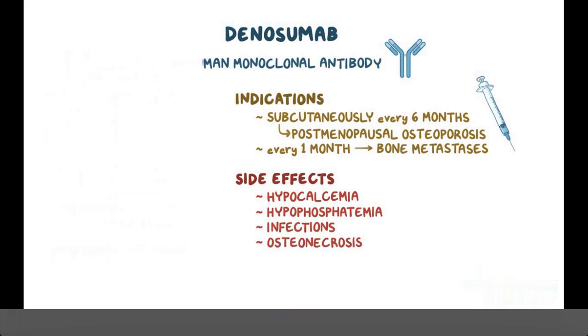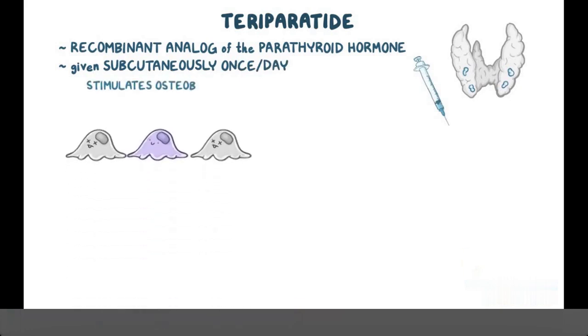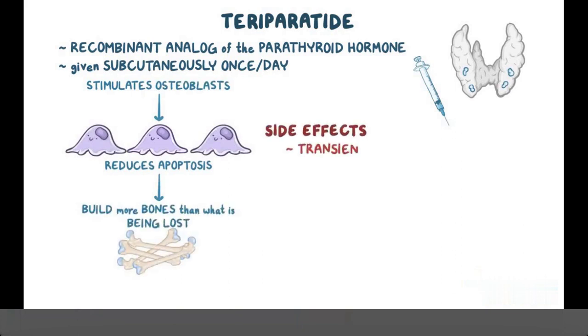Now let's switch gears and shift our focus onto hormonal modulators. First, let's start with teriparatide, a recombinant analog of the parathyroid hormone, which is given subcutaneously once per day. Instead of decreasing bone breakdown, teriparatide works by stimulating the osteoblasts and reducing their apoptosis so they can build more bones than what is being lost.